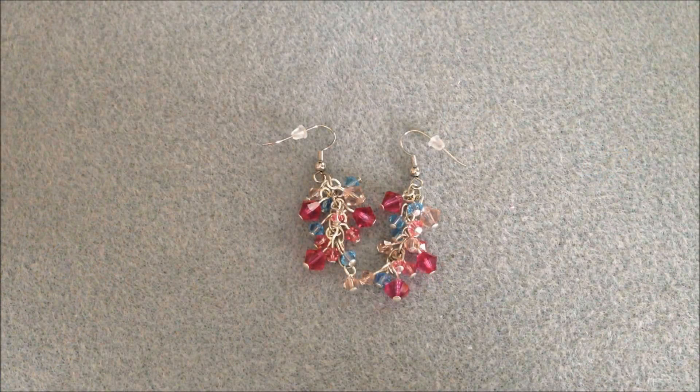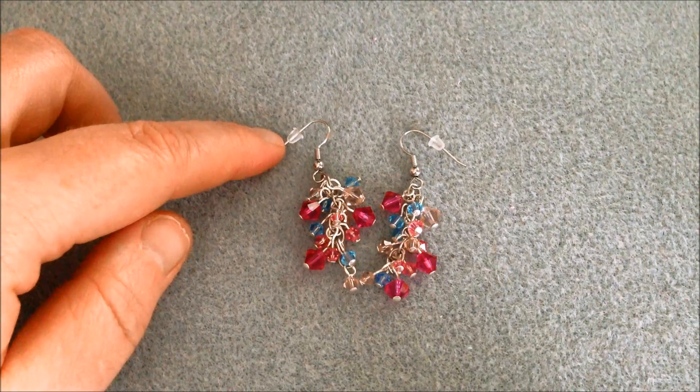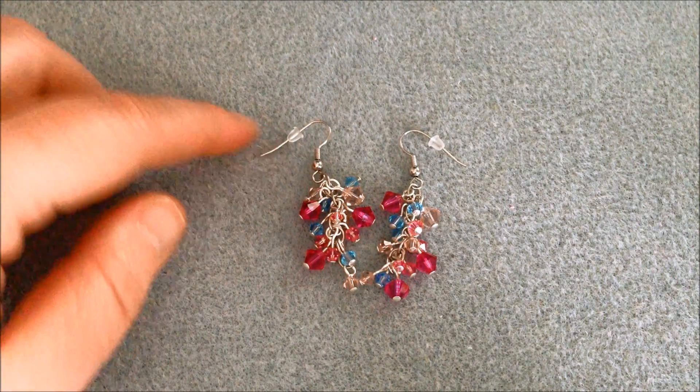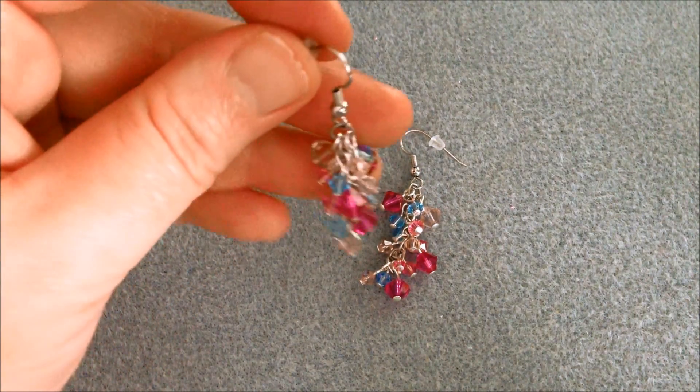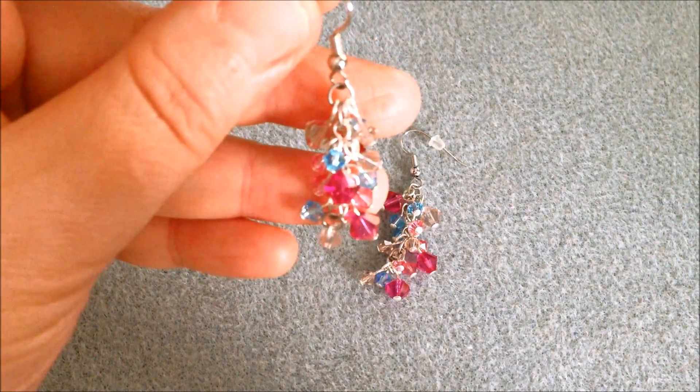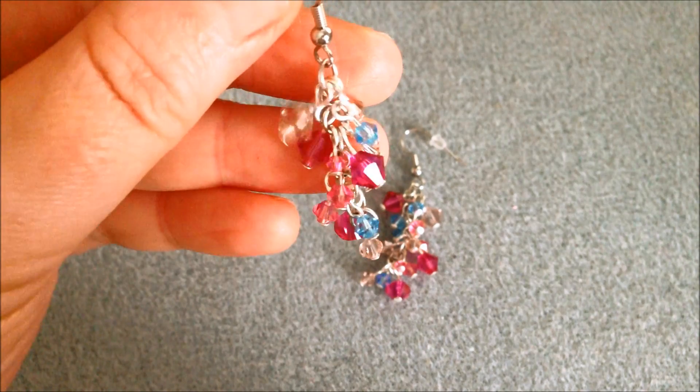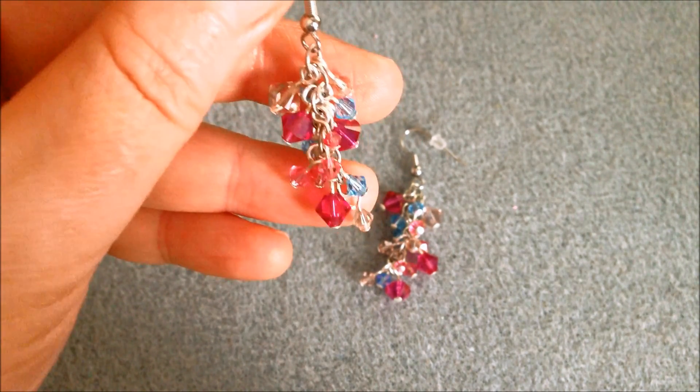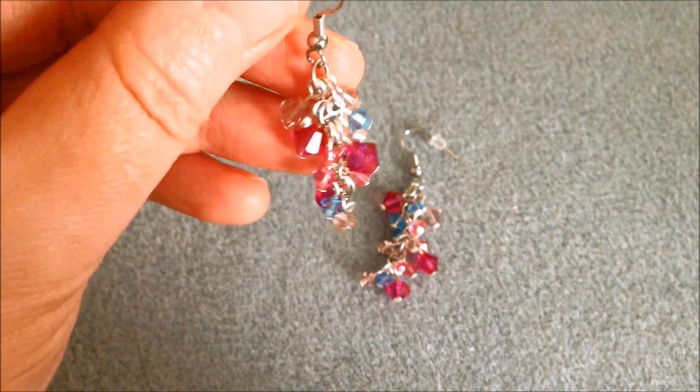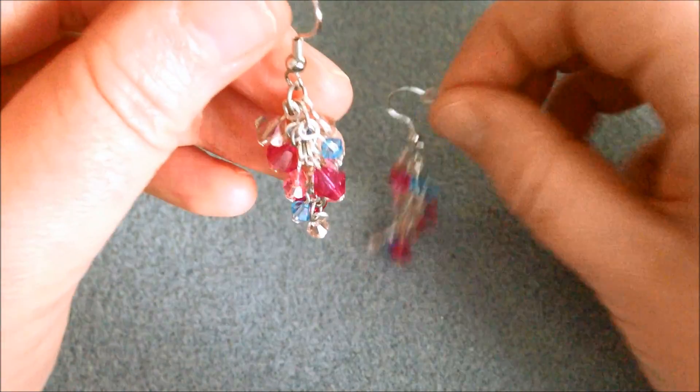So here they are the finished earrings and as you can see I put these little stoppers on the ear wires so that they can stay better in one's ear. And here you can see more closely. I didn't actually count how many little danglers I put in here but I put the same amount in both of them using the same amount of each color.